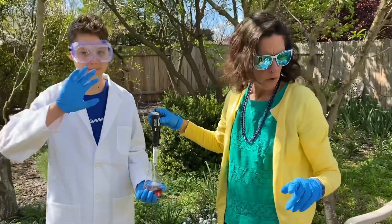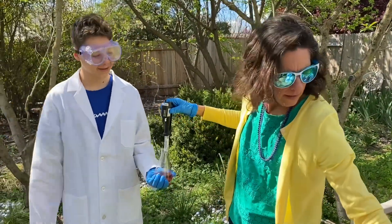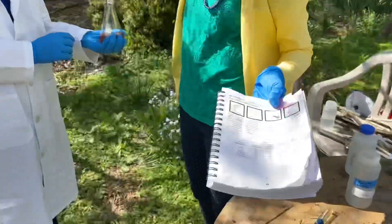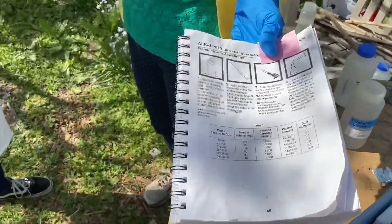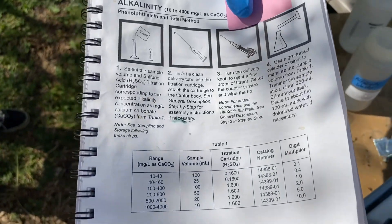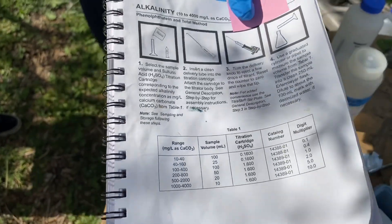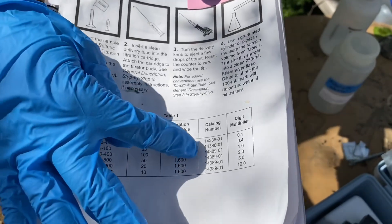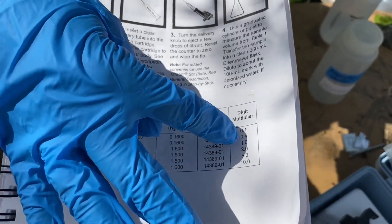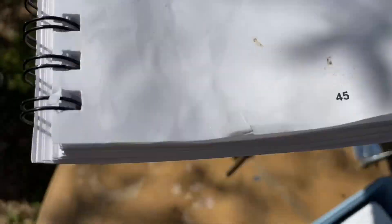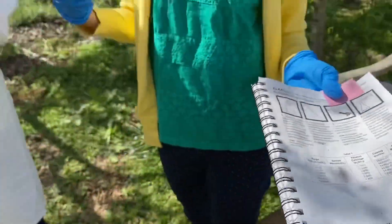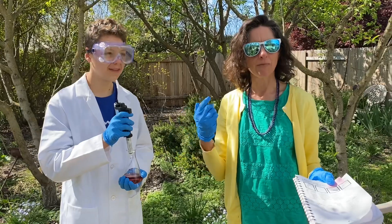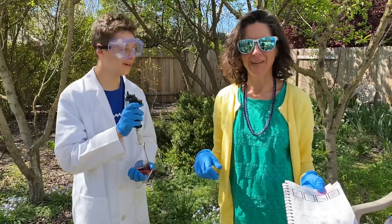I think it's 55. So we're going to say 55 drops for that one. And then we're going to go to our chart — where we were doing 100 milliliters and 1.6 normal. So we're going to multiply it by one. So it's an alkalinity of 55 — 55 drops times one equals 55. Really, we got it!